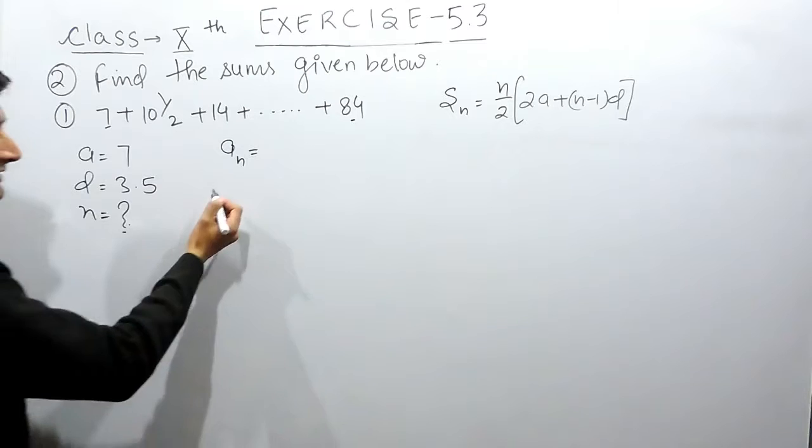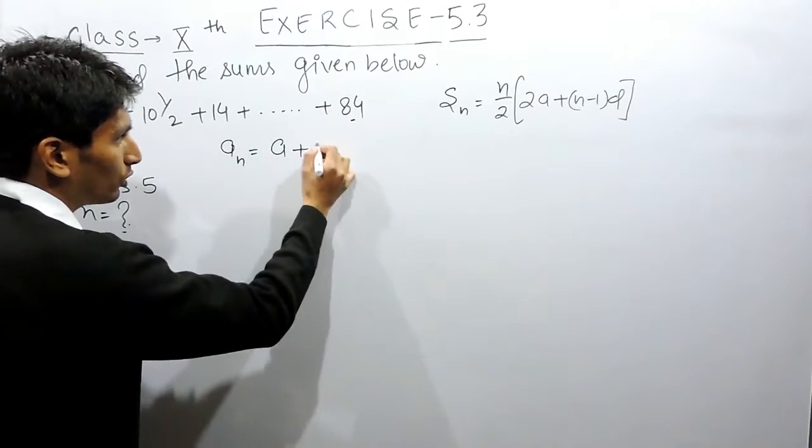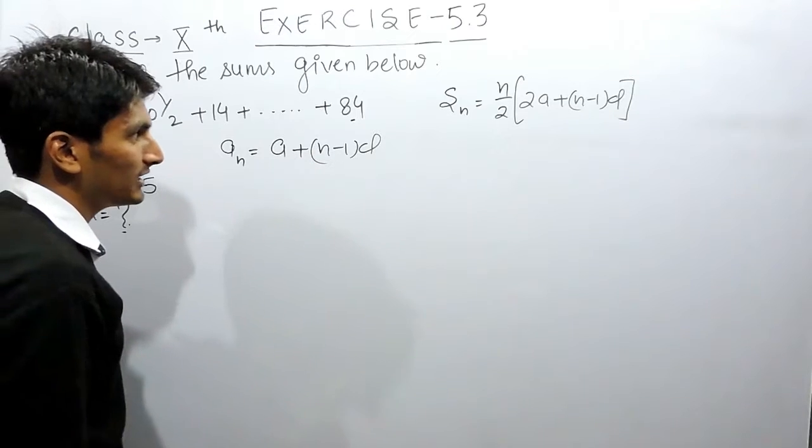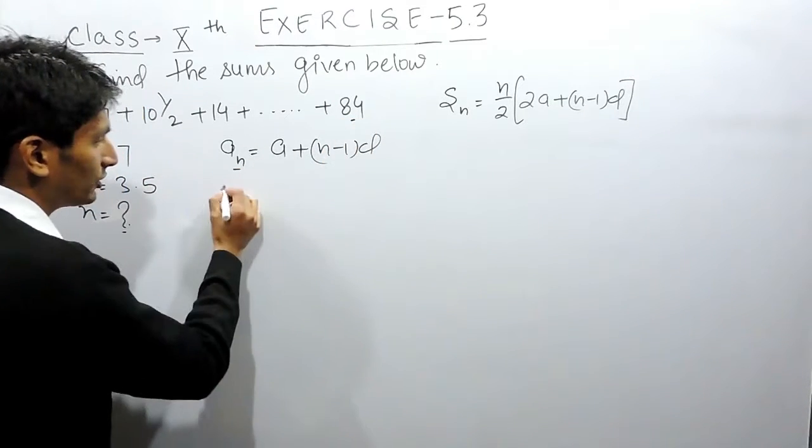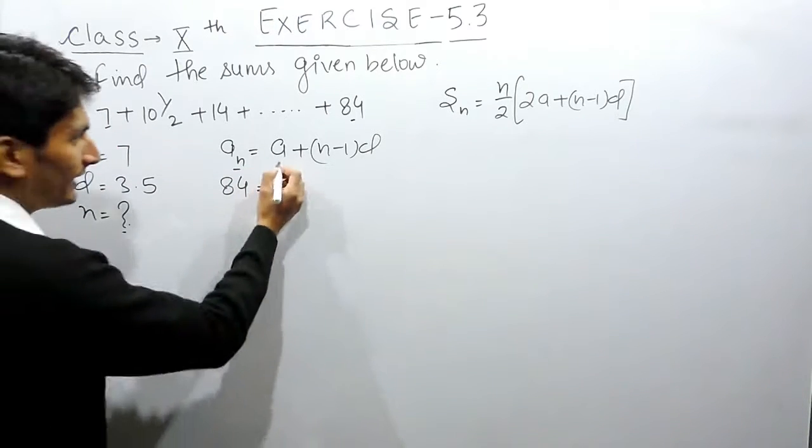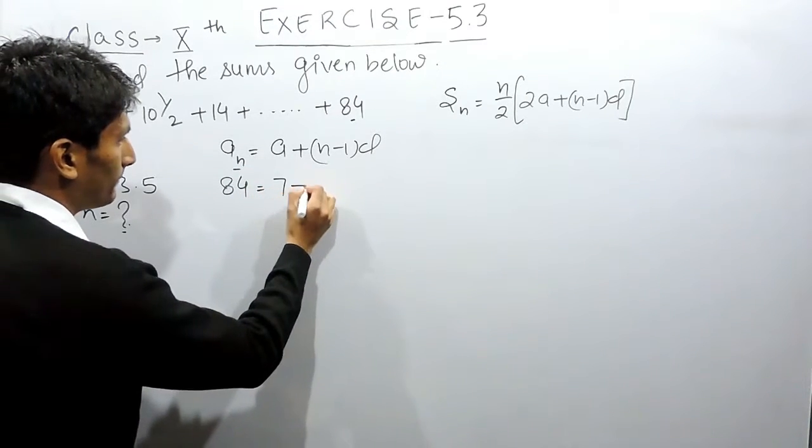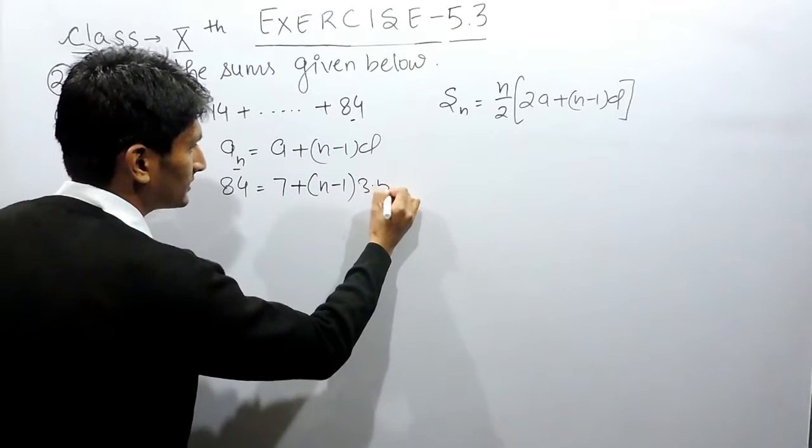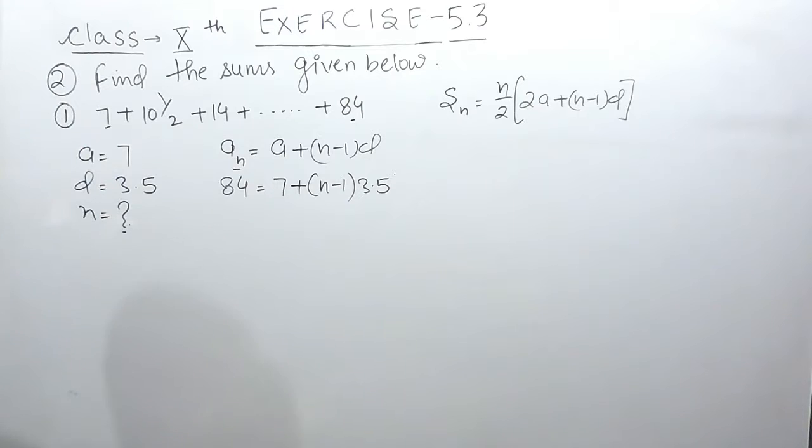If you want to find the nth term, the formula says the nth term must be a plus n minus 1 into d. Here the nth term is given to you which is 84, the first term is 7, and the common difference here is 3.5.